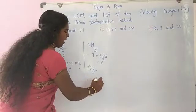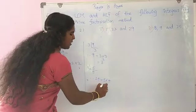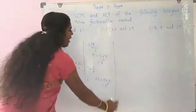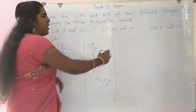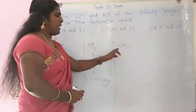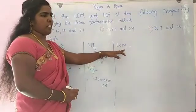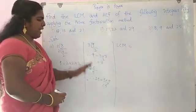Therefore, 25 is equal to 5 into 5, which is 5 square. We want to find the least common multiple for 8, 9 and 25.